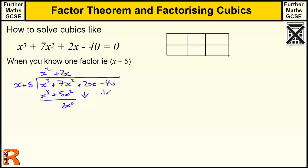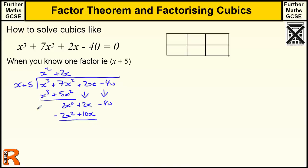As we would in a long division, we bring these terms down to complement what we've got left over. Then we times this by 2x to get 2x², which is what we want. Then 2x times 5 is 10x. We subtract those to find out what we need to combine with the 10x to make 2x — we need to take away this, which gives us minus 8x.